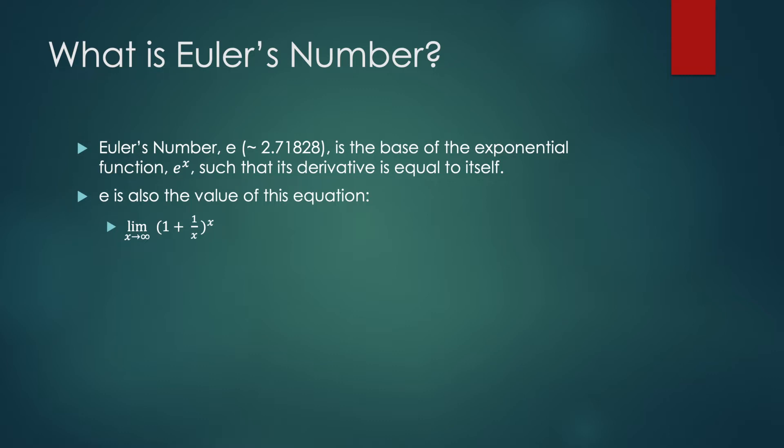So you have 1 plus 1 over X, where X is the number of compounding periods, and raised all to the X. As your number of compounding periods approaches infinity, such that you're compounding it continuously, then the equation is equal to e.